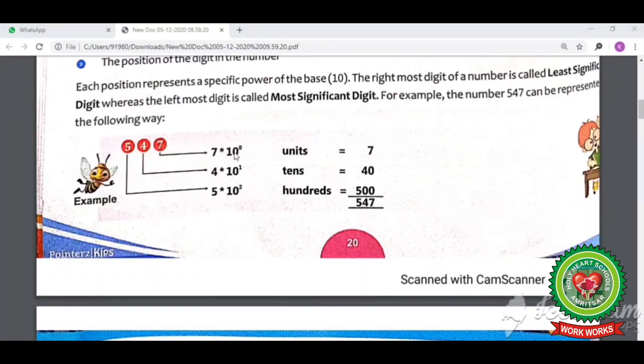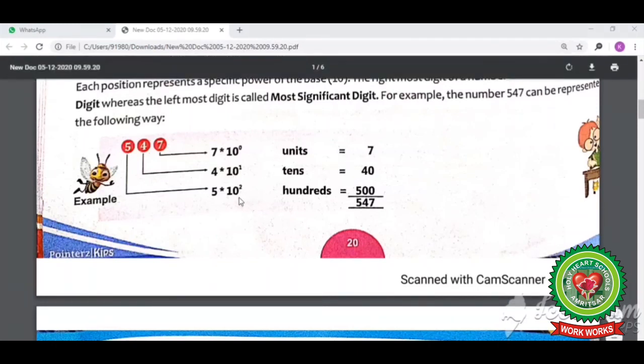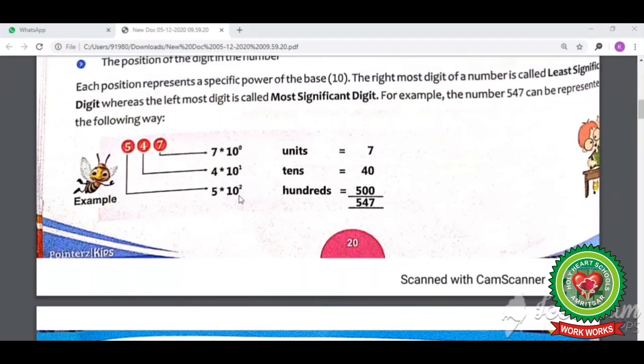So here 10 raised to power 0 means 1. 7 multiply 1 is equal to 7. And here 10 raised to power 1 means 10, so 4 multiplied by 10 is equal to 40. And here 10 raised to power 2, it means you will not do multiplication 10 multiplied by 2, you will write 10 two times: 10 into 10. So its output will be 100. So 5 multiplied by 100 is equal to 500.